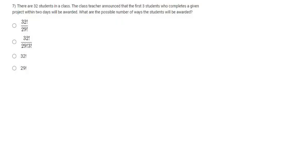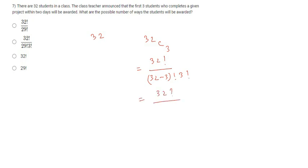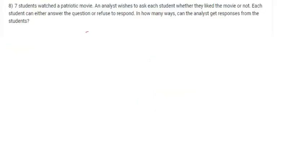There are total 32 students in the class, and among them only three students are awarded. The combination to select those three students will be 32C3. If we simplify this, that will be 32! / (29! × 3!). So option B is correct.